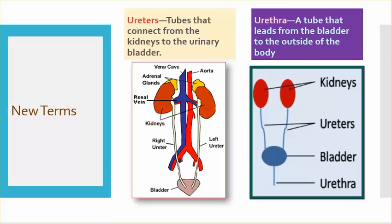Ureters: tubes that connect from the kidneys to the urinary bladder. Urethra: a tube that leads from the bladder to the outside of the body.